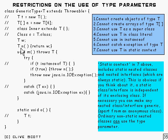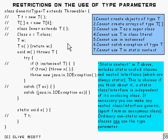You can return something of type T — that's fine. You can even throw something of type T, but of course you have to remember that because you're throwing it, it has to be of type Throwable. Fortunately, in this case it is, so that's all right.